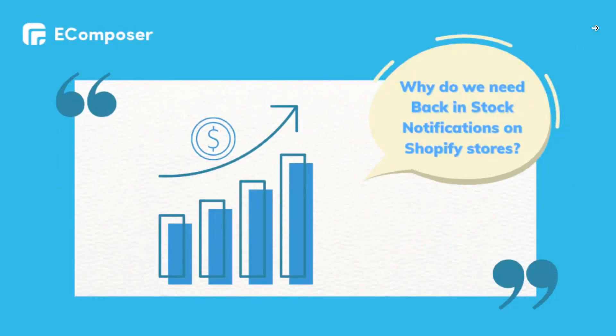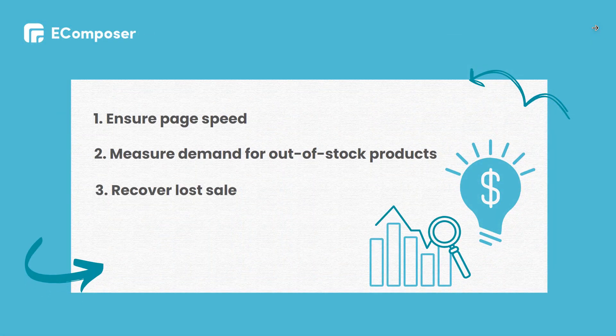What are the top advantages of using this extension? Firstly, back-in-stock notification is already integrated with eComposer, which would not affect your page speed as it would if you used a third-party app with the same function. Secondly, you can measure demand for out-of-stock products based on the number of customers on the waiting list. You can make more accurate forecasts. On top of that, this extension also helps you to recover your sales whenever your product is out of stock.